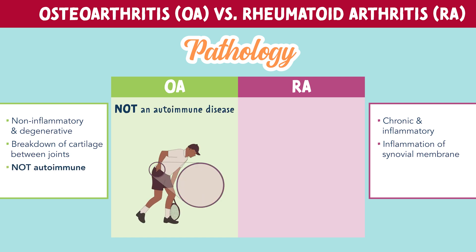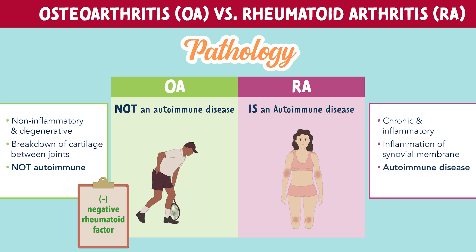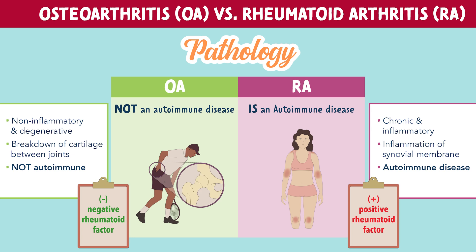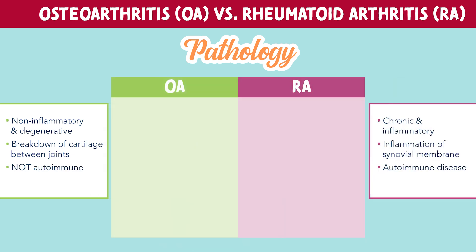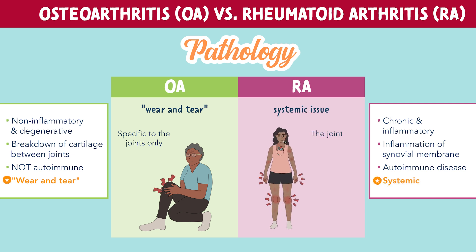Osteoarthritis is not an immune disease, and it only focuses on the joints, meaning tests will produce a negative rheumatoid factor. Rheumatoid arthritis, on the other hand, is an autoimmune disease, and will produce a positive result for rheumatoid factor. OA is caused by wear and tear, specific to the joints only, where RA is a systemic issue, meaning it affects the joints and also other organ systems.